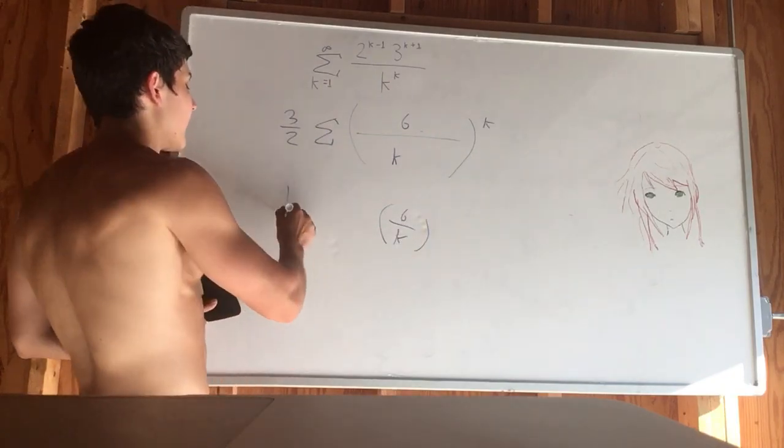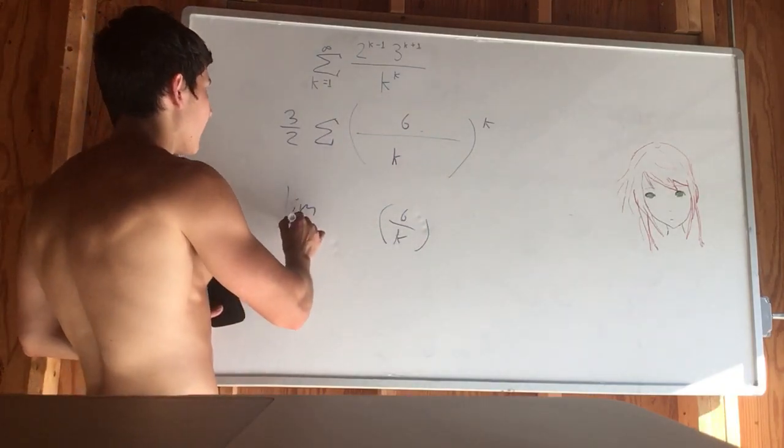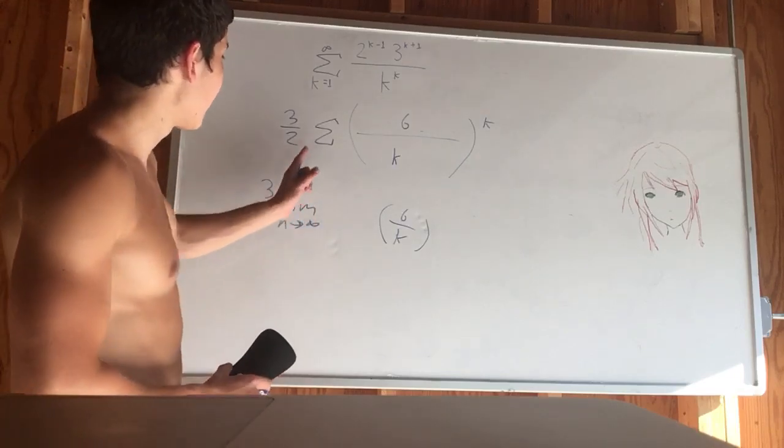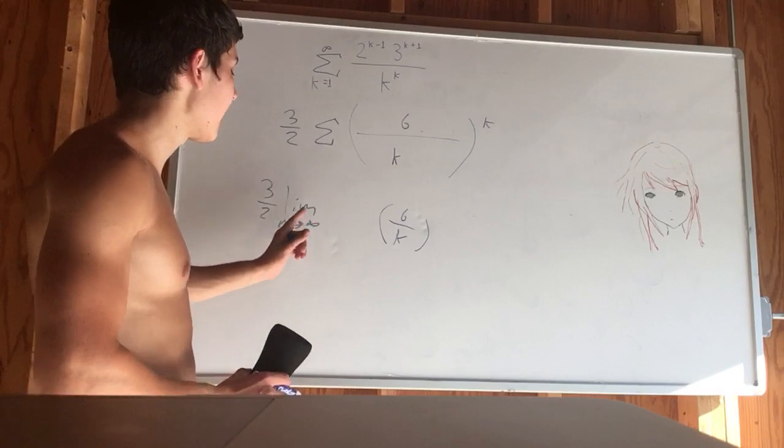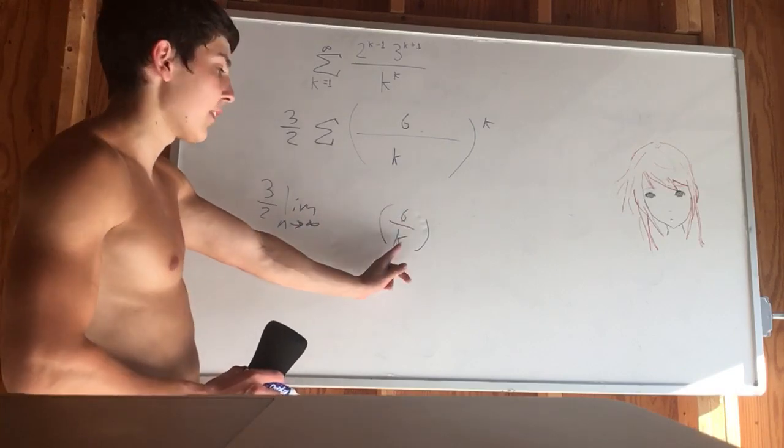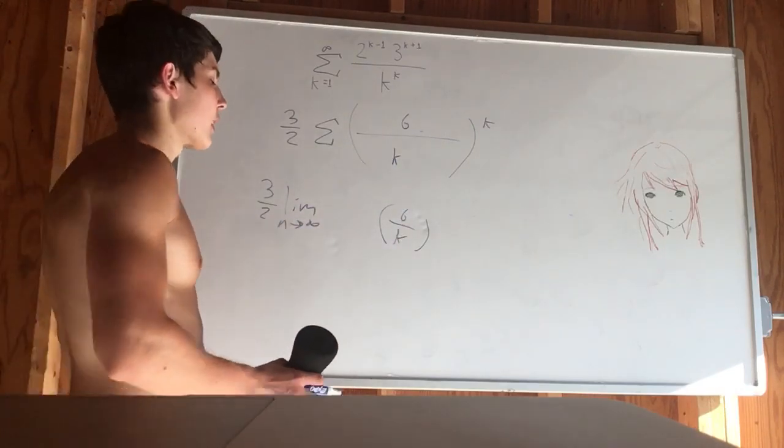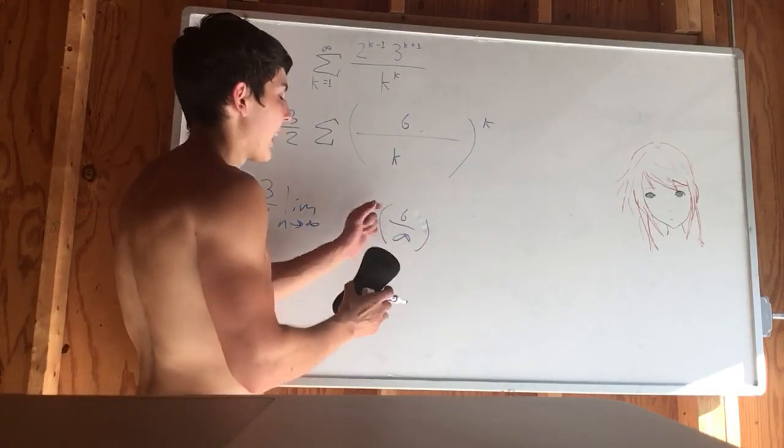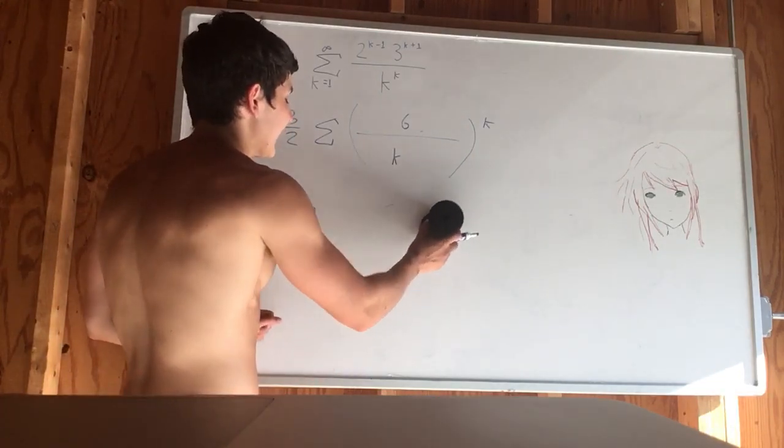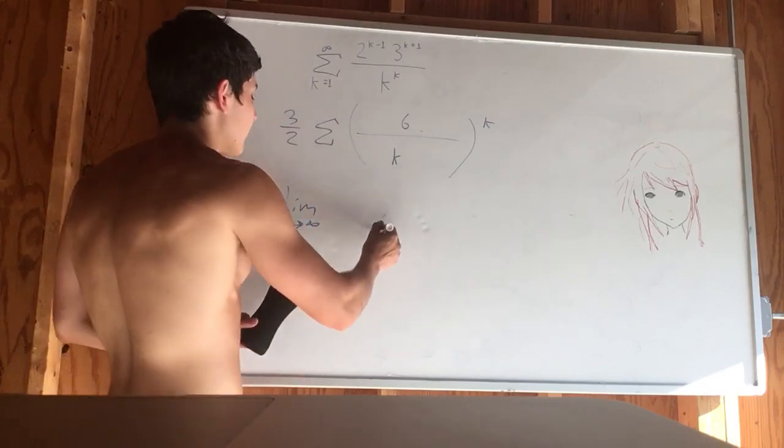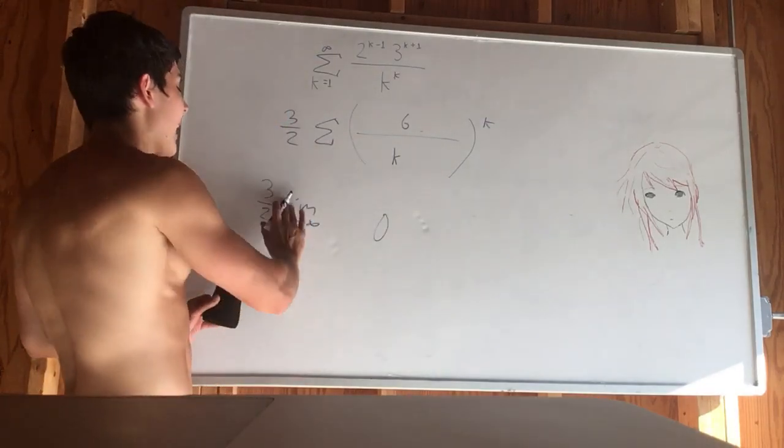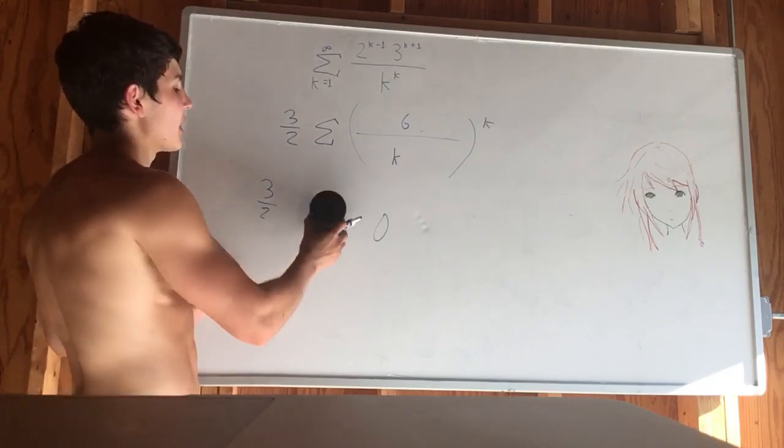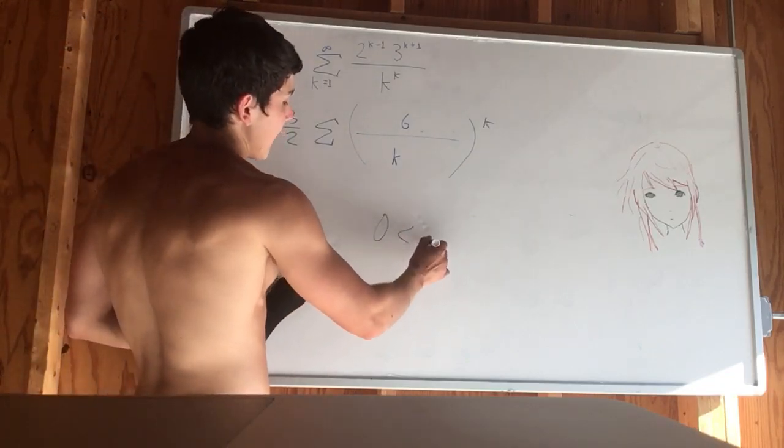And we were taking the limit as n approaches infinity of all of this, remember. So we had 3 halves outside of our series being multiplied to it and the limit as n approaches infinity of this is going to give us 0 because we plug infinity into a denominator that has 6 as a numerator. The 6 is obliterated to 0, so 0 times 3 halves is 0, and 0 is less than 1.